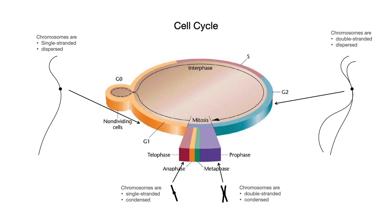They're going to go through mitosis, and at the end of that, those two strands are going to separate apart. One of each of those two is going to go to each of the daughter cells produced by mitosis. So you get two cells out of this, and they're back to the normal state.